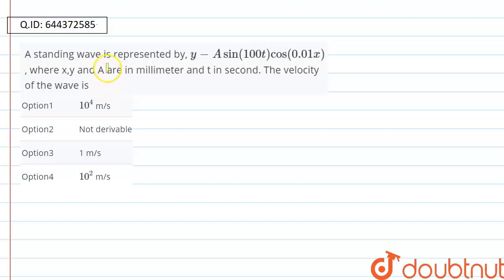Hello friends, the problem is a standing wave is represented by y equals A sin(100t)cos(0.01x), where x, y, and A are in millimeter and t is in second. The velocity of the wave will be, so we need to tell the velocity of the wave.